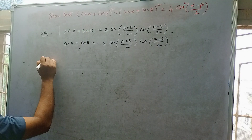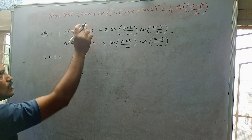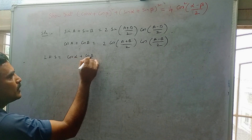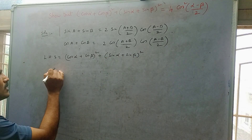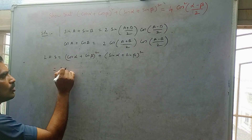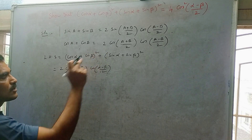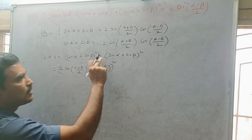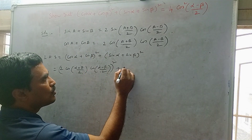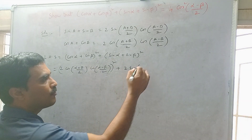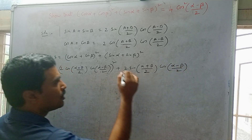Now writing the left hand side: LHS = (cos α + cos β)² + (sin α + sin β)². Applying the cos A + cos B formula gives [2 cos((α + β)/2) cos((α − β)/2)]², plus applying the sin A + sin B formula gives [2 sin((α + β)/2) cos((α − β)/2)]².